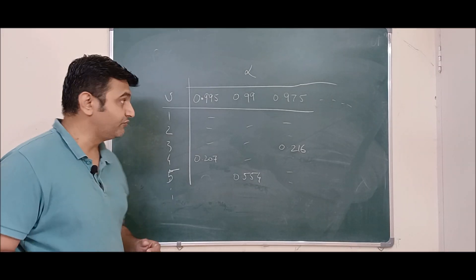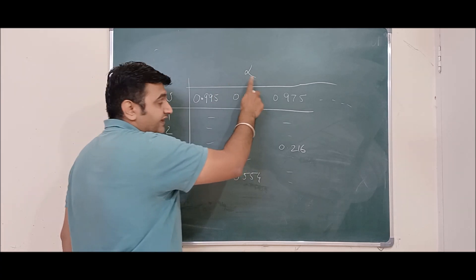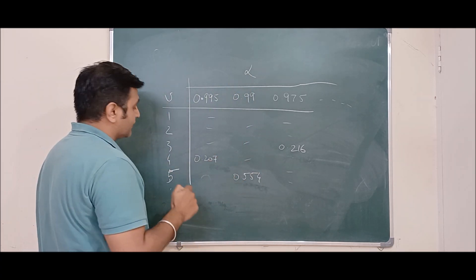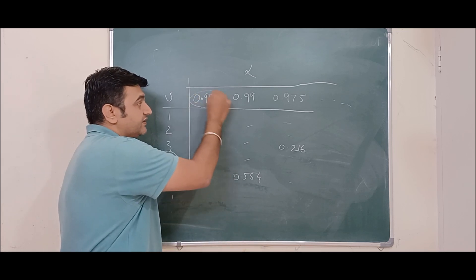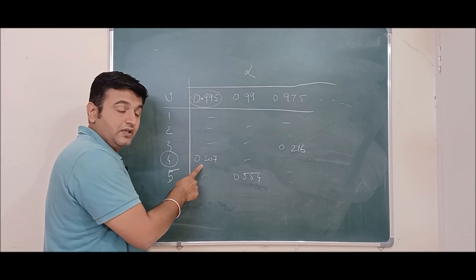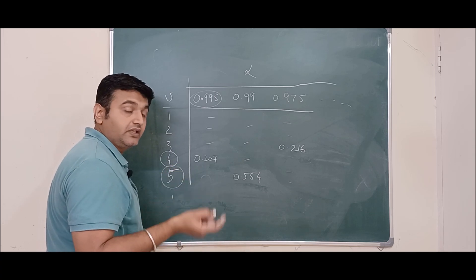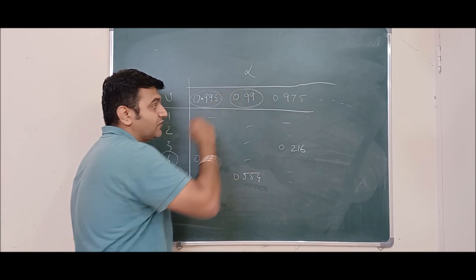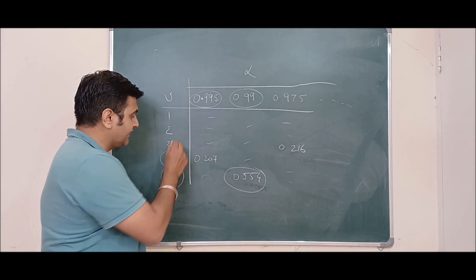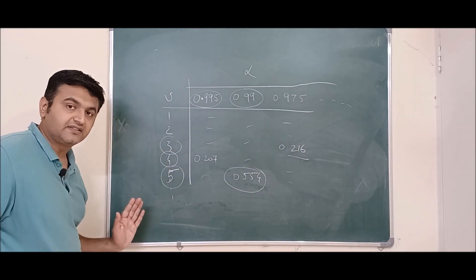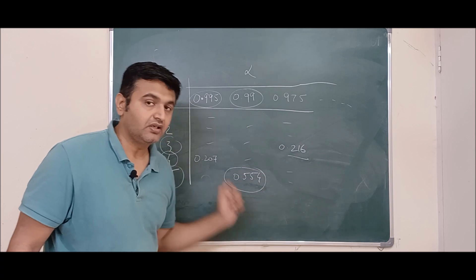When you see a chi-square distribution table, the left column represents nu, the degrees of freedom, and the top row represents alpha, the area towards the right. For example, with 4 degrees of freedom and a given alpha value, you look up the corresponding chi-square value from the table. All the entries in the table are chi-square values corresponding to specific combinations of degrees of freedom and right-tail area alpha.